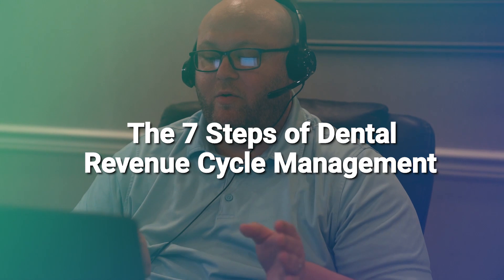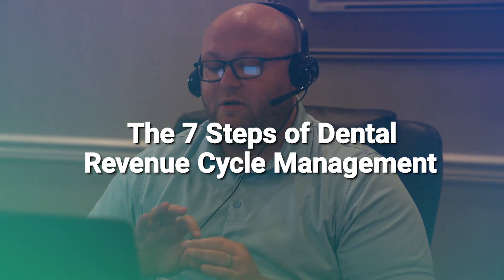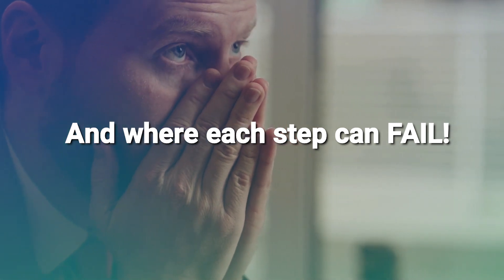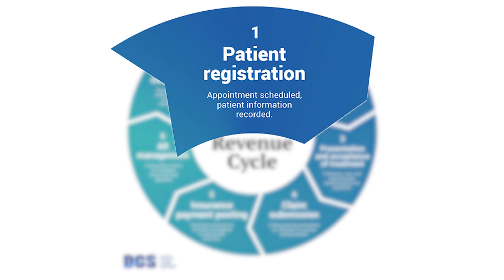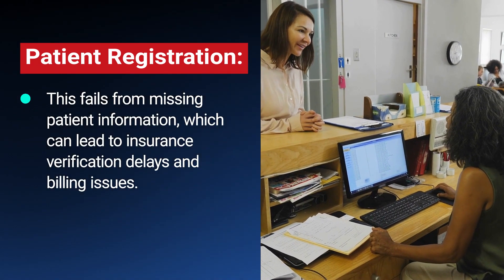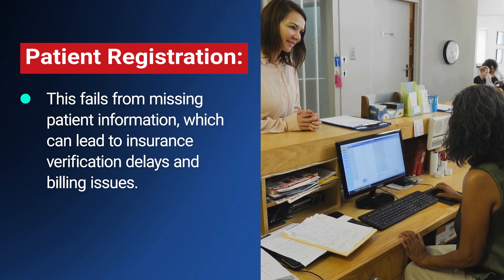Let's break down the Dental Revenue Cycle into 7 crucial steps, and where each step can fail, potentially derailing your revenue process. Step 1 is patient registration. It all starts when a patient books an appointment. Capturing accurate personal and insurance details is key. This step fails from missing patient information, which can lead to insurance verification delays and billing issues.